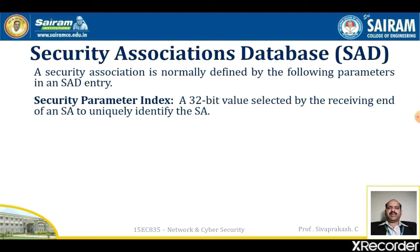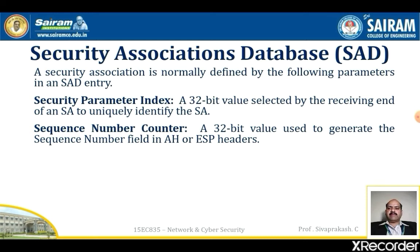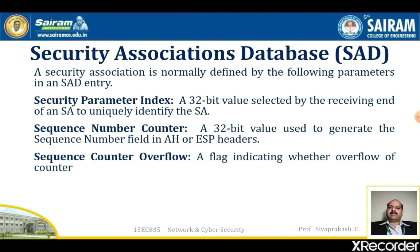The security parameter index is a 32-bit value selected by the receiving end of a security association to uniquely identify the SA in an SAD entry. For an outbound SA, the SPI is used to construct the packet's AH or ESP header. For an inbound SA, the SPI is used to map traffic to the appropriate SA. The next parameter is the sequence number counter — a 32-bit value used to generate the sequence number field in an AH or ESP header. The sequence counter overflow flag indicates whether overflow should generate an auditable event and prevent further transmission.